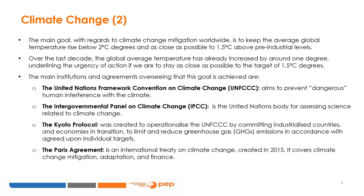This protocol set binding emission reduction targets for 37 industrialized countries, economies in transition, and the European Union. Overall, these targets were supposed to add up to an average 5% emission reduction compared to 1990 levels over the five-year period of 2008 to 2012, the first commitment period. The Paris Agreement, created in 2015, covers climate change mitigation, adaptation, and finance. It aims to keep global warming well below 1.5 degrees Celsius and replaced the Kyoto Protocol. Unlike Kyoto, no binding emission targets were set; instead, the procedure of regularly setting ever more ambitious goals and re-evaluating these every five years has been made binding.